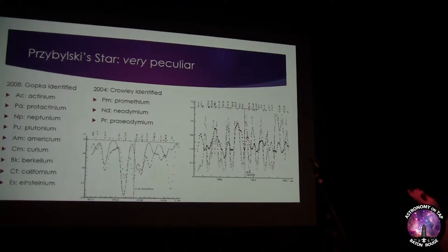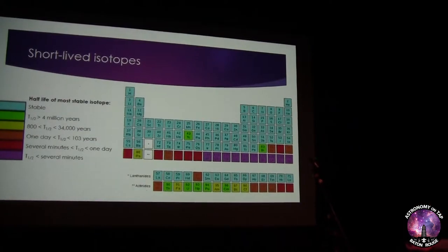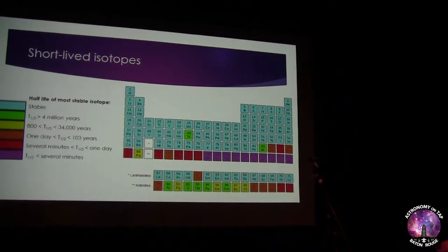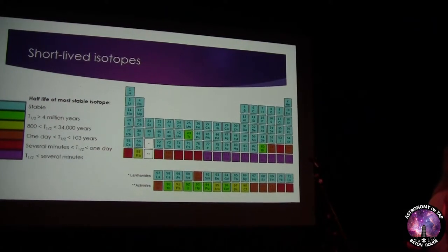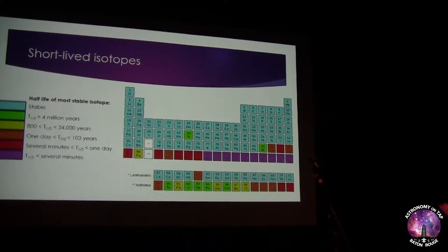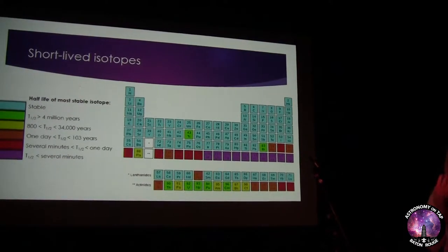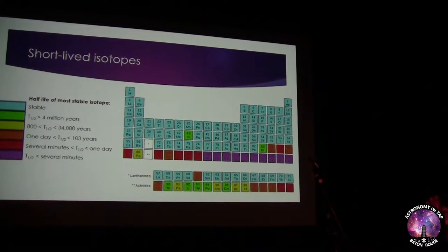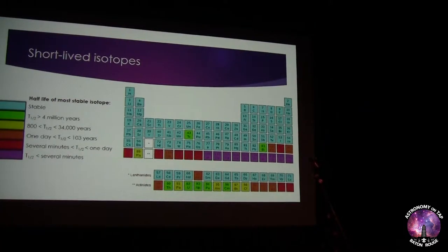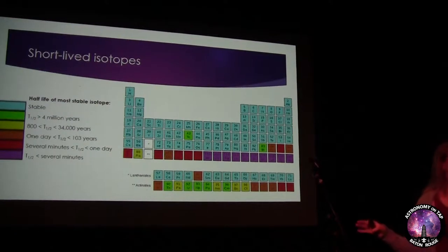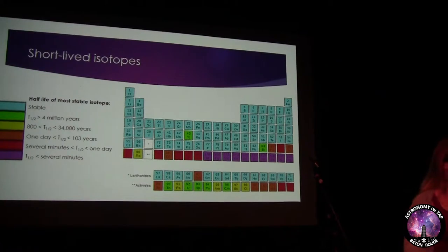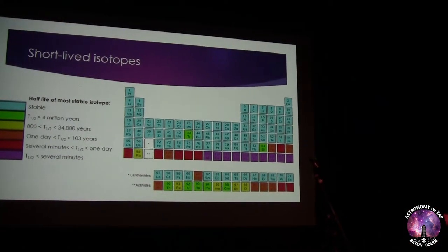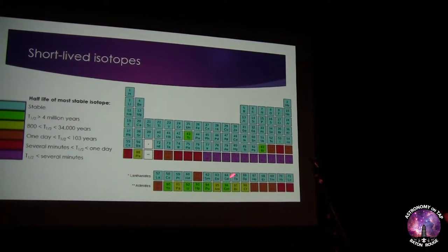Why should you care about these weird elements? Because they are very short-lived. Here I'm showing the periodic table with the longest-lived isotope of each element. An isotope is defined by the number of protons — which establishes what element you are — and the number of neutrons. The longest-lived isotope of each element ranges from totally stable to only a few minutes in half-life; in purple you really don't want to be around those.